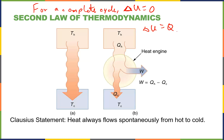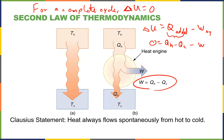Since ΔU = Q − W by the First Law, and looking at the schematic, the net heat added is QH − QC. If ΔU = 0, then 0 = QH − QC − W, which gives us W = QH − QC. The work you get out equals the difference between heat in and heat out, or equivalently, QH = W + QC.